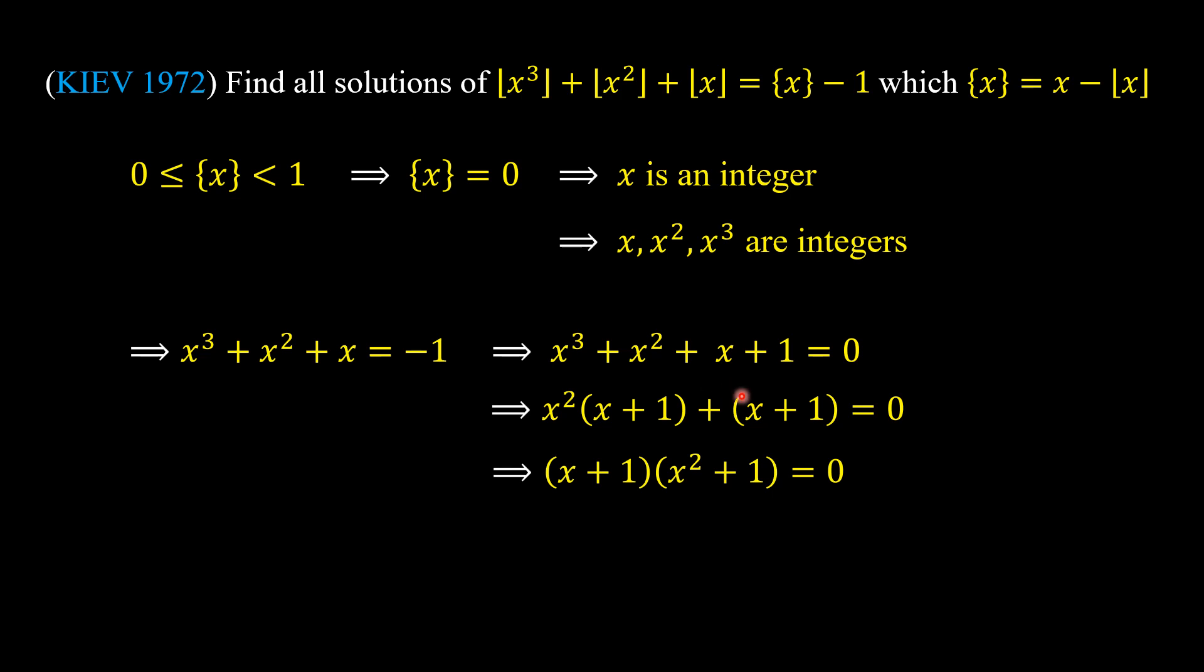So we have (x + 1)(x² + 1) = 0. Because x² + 1 ≥ 1, we can divide this equation by x² + 1, so we have x + 1 = 0.